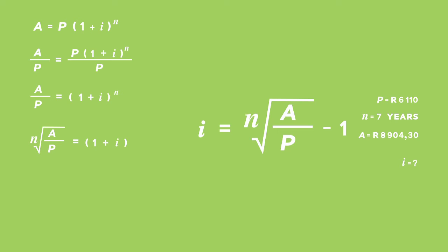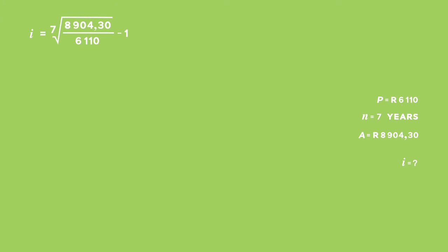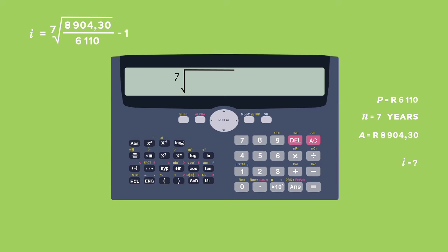Now let's put in the values we have. We know that n is seven. The accumulated amount A is 8,904.30, and the value P is 6,110, minus one. Find the seventh root of 8,904.30 divided by 6,110, minus one.